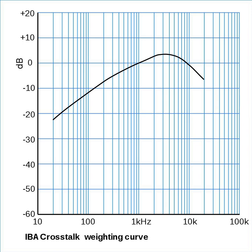In structured cabling, crosstalk refers to electromagnetic interference from one unshielded twisted pair to another twisted pair, normally running in parallel. Signals traveling through adjacent pairs of wire interfere with each other. The pair causing the interference is called the disturbing pair, while the pair experiencing the interference is the disturbed pair.